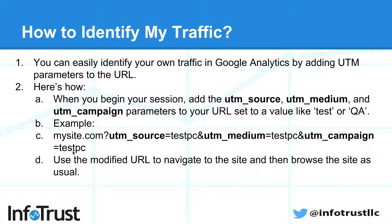So as an example, if my site was mysite.com, here I've added UTM source, medium, and campaign, and I've set them all equal to "test PC". Now that I have my modified URL, I paste this into my browser, navigate to the site, and browse and perform my tests as I usually would.